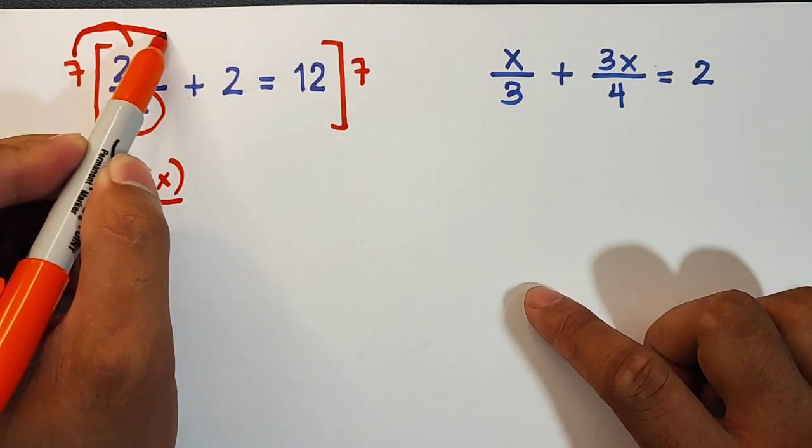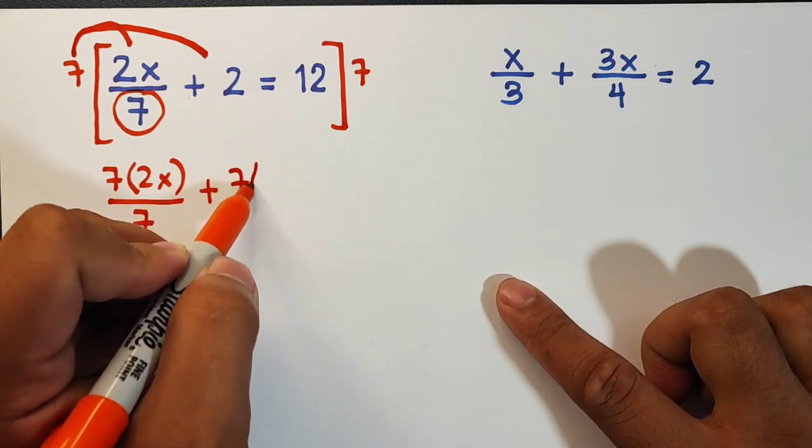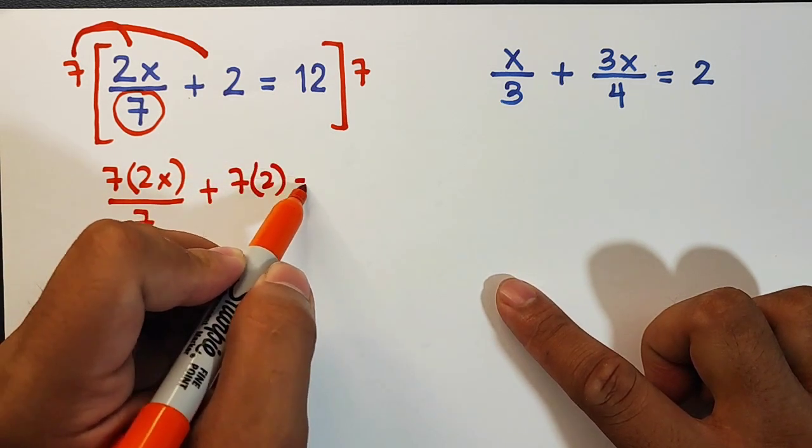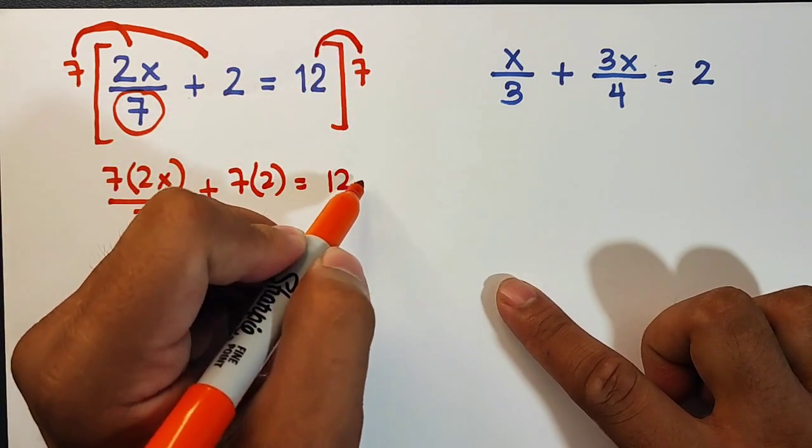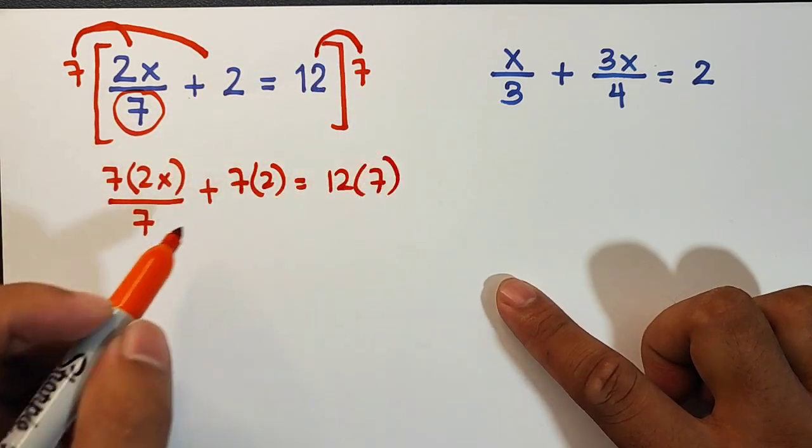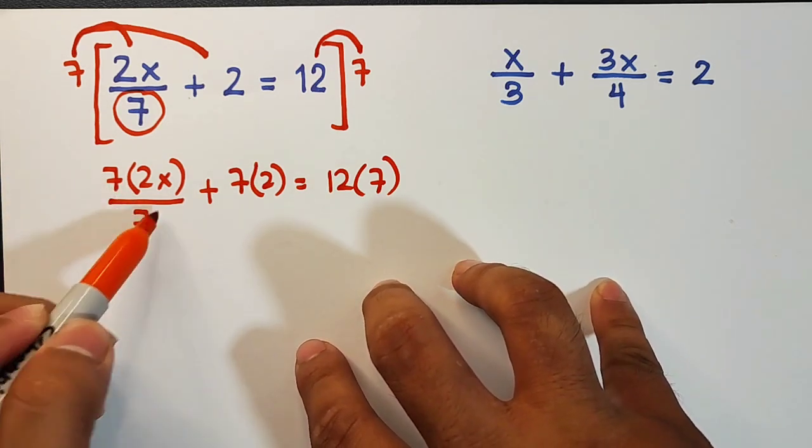So we have 12 times 7, and then we will simplify this. As you can see this part, 7 times 2x will become 14x over 7, but we can easily cancel out 7.